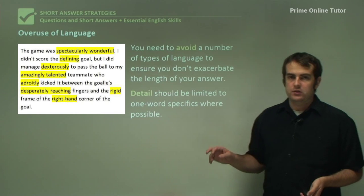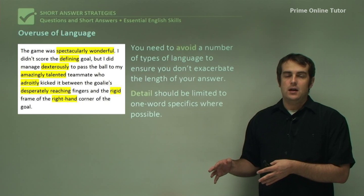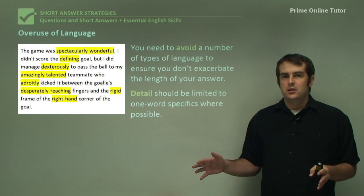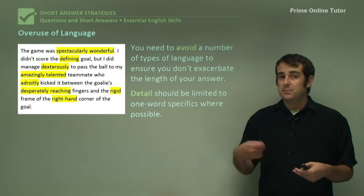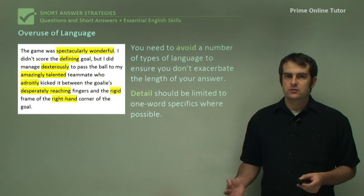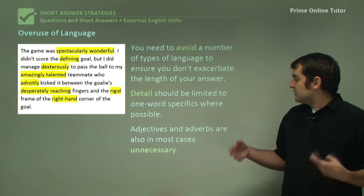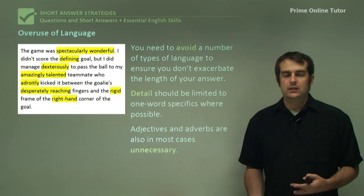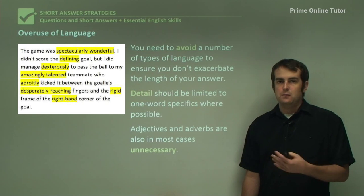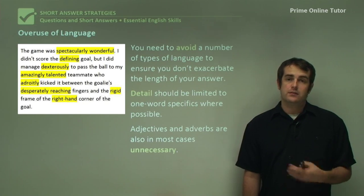Detail should be limited to one-word specifics where possible. For example, instead of saying 'an accident that claimed many, many people,' you could simply say 'a tragedy' and not have to keep referring to it. Using a one-word specific and repeatedly calling it that will save you having to explain it over and over again, especially if you're using many different words to describe the same idea. Use consistent language and that will save you having to rewrite it. Adjectives and adverbs are also, in most cases, unnecessary in short answers and essay writing. You don't need to describe things, add extra detail, or say whether they're good or bad — just follow the detail of the question and give an answer which matches that.